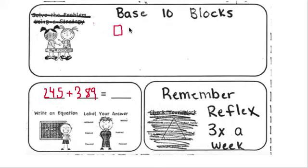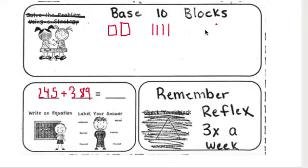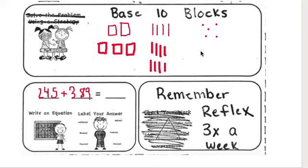So our first number is 245. So we're going to draw two hundreds, which are squares. Then we're going to draw four tens. And then five ones. So there's our first number, two hundred forty-five. Now we need to draw three hundred eighty-nine. So that's three hundreds, eight tens, and nine ones.